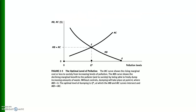Here is a diagram showing the optimal level of pollution. The MC curve shows the rising marginal costs — or losses to society — from increasing levels of pollution. The MB curve shows the declining marginal benefits to the polluter and to society from freely dumping increasing amounts of waste. Without controls, dumping will take place at point A, where marginal benefit equals zero. The optimal level of dumping is Q₀, at which the MB and MC curves intersect and MB equals MC.